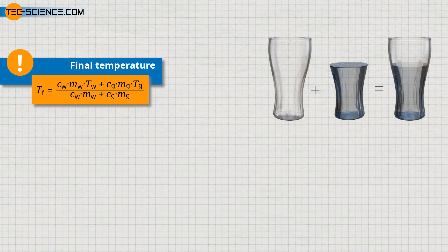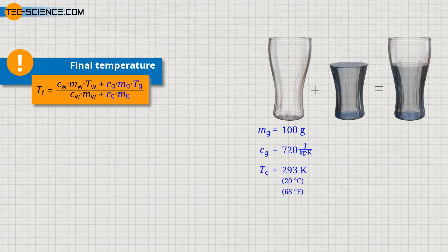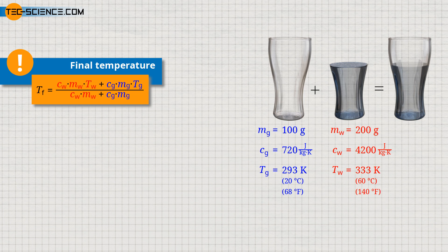Example. We assume a glass with a mass of 100 grams. The specific heat capacity of glass can be assumed to be 720 joules per kilogram and kelvin. The initial temperature of the glass is room temperature: 20 degrees Celsius, which corresponds to 293 kelvin or 68 degrees Fahrenheit. Now 200 milliliters of water with a mass of 200 grams is poured into the glass. The initial temperature of the water is 60 degrees Celsius, corresponding to 333 kelvin or 140 degrees Fahrenheit. The specific heat capacity of water can be assumed to be 4,200 joules per kilogram and kelvin. With these given values, we can now calculate the final temperature using the formula derived previously.